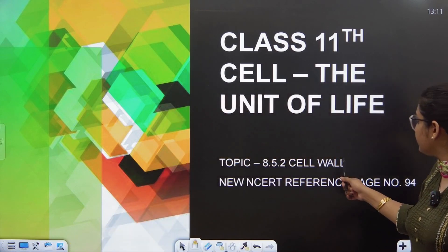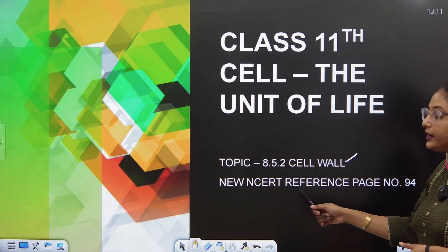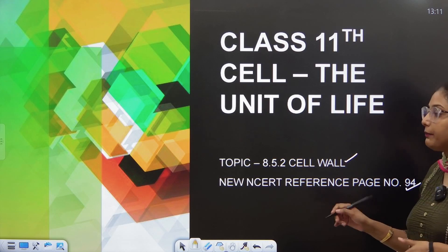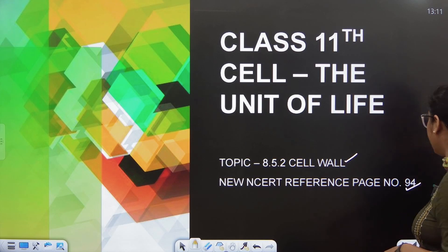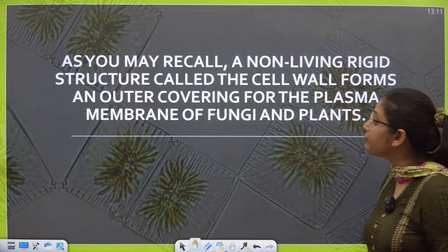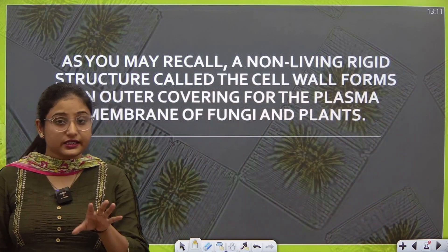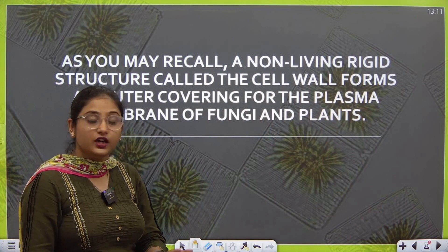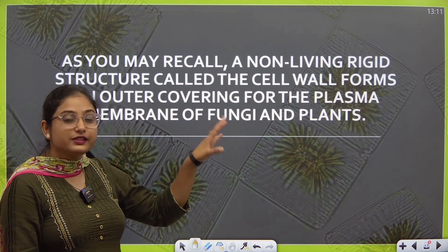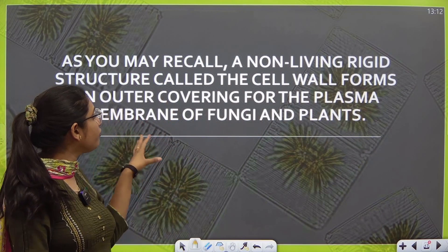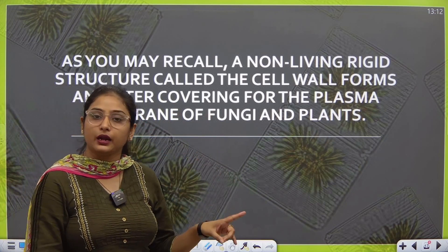Let's refer to cell wall and you can open your NCERT page number 94 where it is clearly given in detail. I have picked up the lines from there. As you may recall, a non-living rigid structure. Why non-living? Because it is dead, it is very thick, it is hard. A non-living rigid structure called cell wall forms an outer covering for the plasma membrane of fungi and plants.